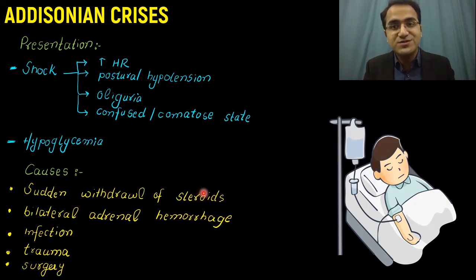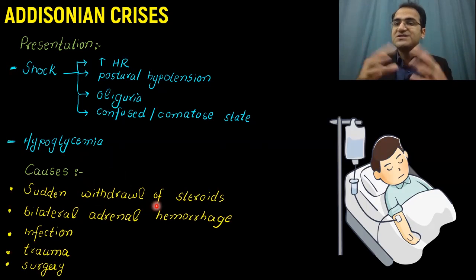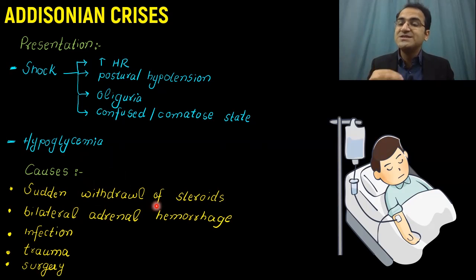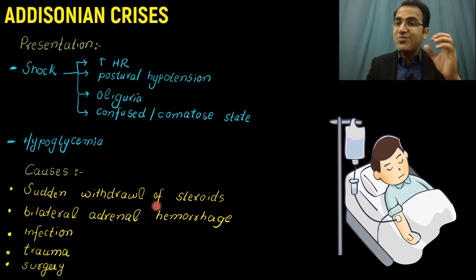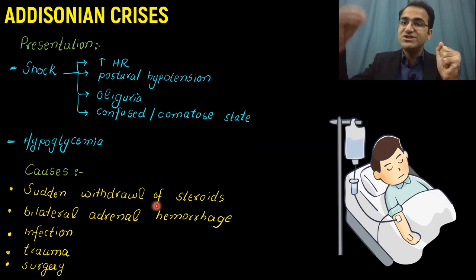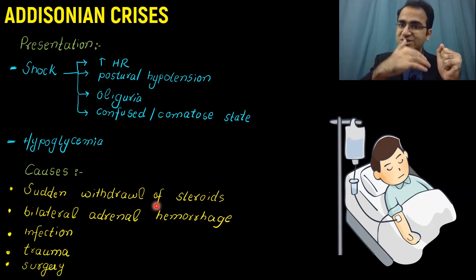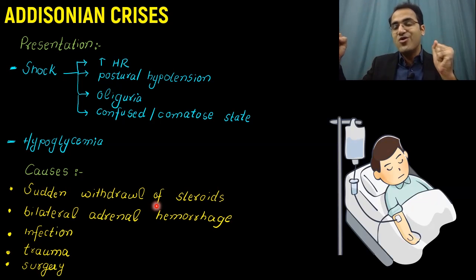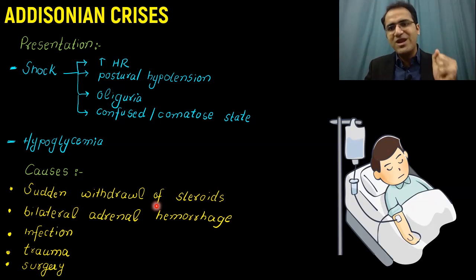Causes include sudden withdrawal of steroids — one of the most important causes. These are patients who are chronically taking exogenous steroids and suddenly stop, developing Addisonian crisis. Exogenous intake of steroids suppresses the endogenous production of cortisol from the adrenal glands, which then atrophy. When the patient suddenly stops taking those steroids, endogenous cortisol production is very low because the adrenal glands have atrophied due to negative feedback, and the patient develops Addisonian crisis.